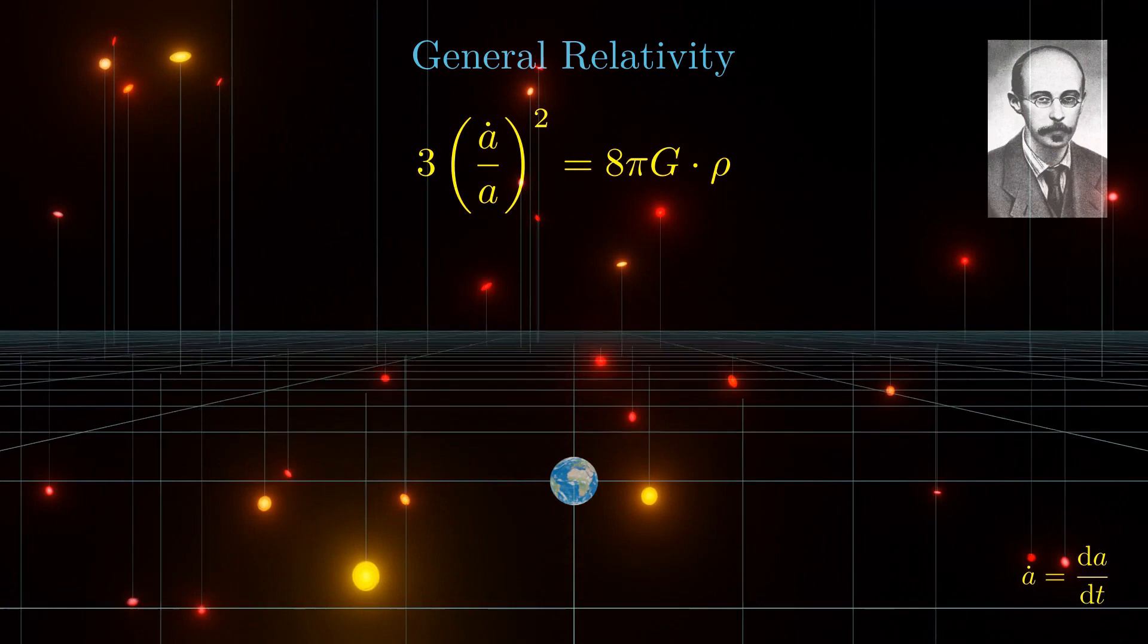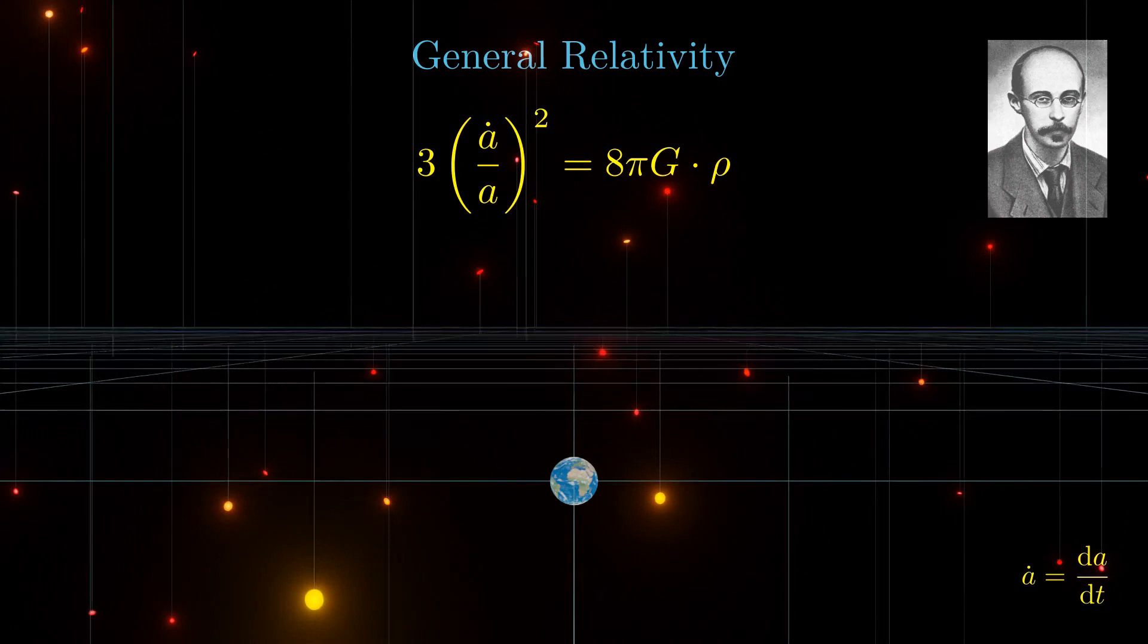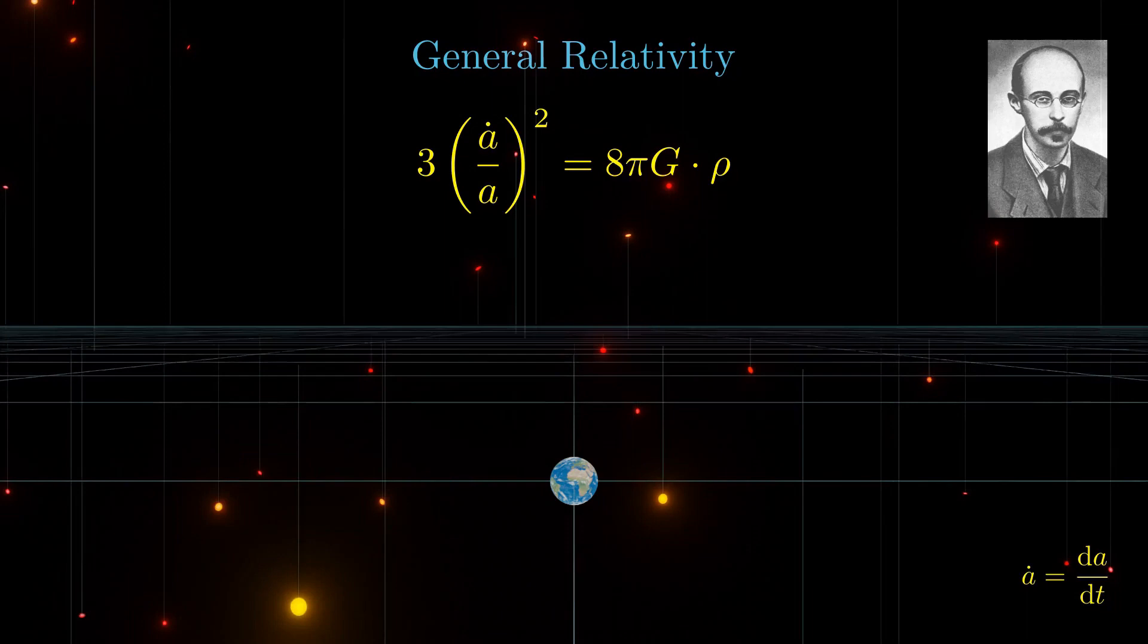On the right-hand side, there is the matter-energy density of the universe. On large scales, the galaxies are distributed rather evenly. Therefore, the matter-energy density can be assumed to be the same everywhere and only depending on time.